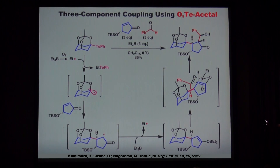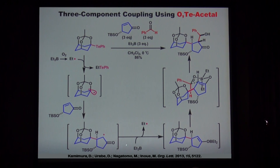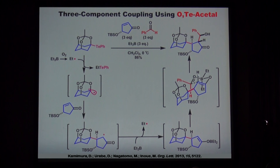If you change the substrate from an alkyl selenide, you can do a radical polar crossover reaction. In this reaction, we no longer use a tin reagent or high temperature. Instead, we use triethylborane, oxygen, and an aldehyde. The radical forms from the weak C-Se bond, and then triethylborane captures this radical to form the boron enolate — so this is no longer a radical intermediate. This boron enolate participates in an aldol reaction through the most sterically favored six-membered transition state, leading to this compound. Under these conditions, three new stereocenters are introduced in a single step.